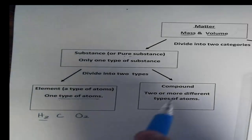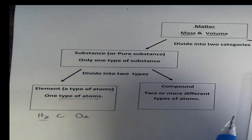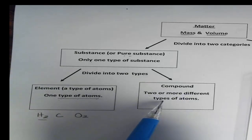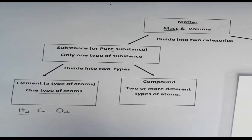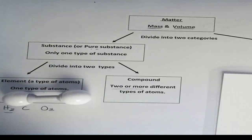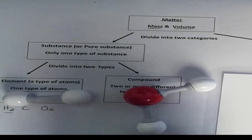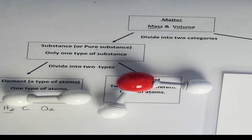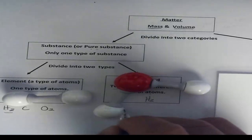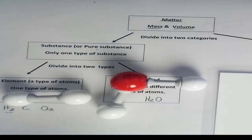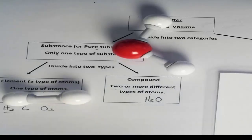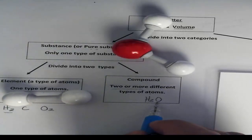Now let's look at compounds. If it is not an element, it must be something else. A compound basically consists of two or more different types of atoms — it has to be two or more. For example, we look at hydrogen gas, which is an element. But what happens when we have oxygen and hydrogen combined together? We have water — H2O. That is H2, two hydrogens, and O, the oxygen. Notice how in this case it is a compound, because we have two different types of atoms: the first type is hydrogen, and the second type is oxygen.